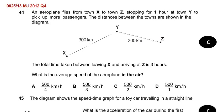May June 2012, paper 13 of IGCSE, question 44: An aeroplane flies from town X to town Z, stopping for one hour at town Y to pick up more passengers. The distances between the towns are shown.